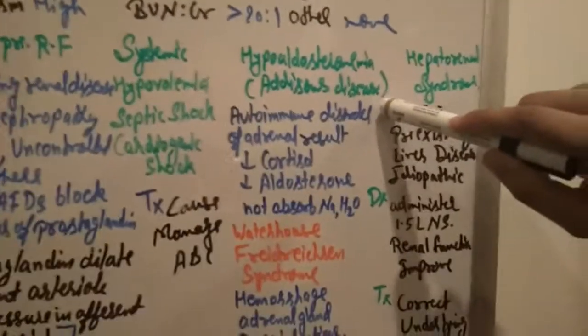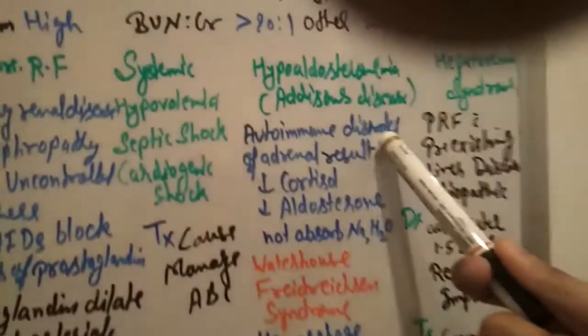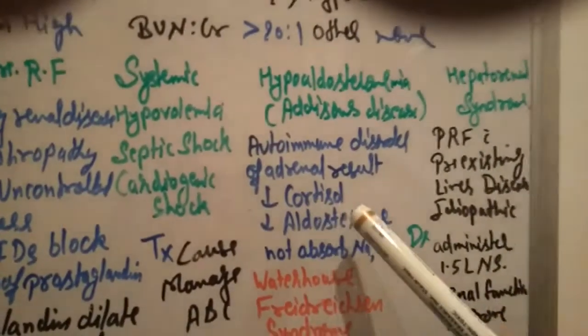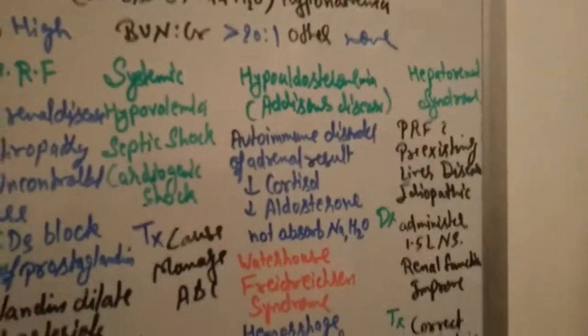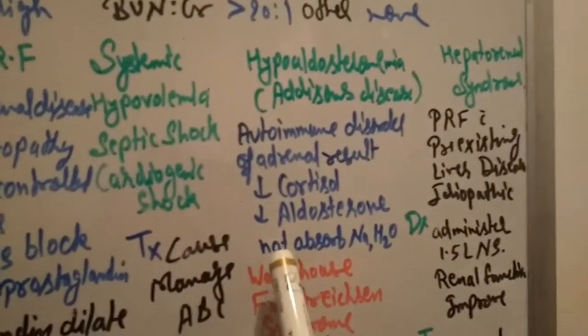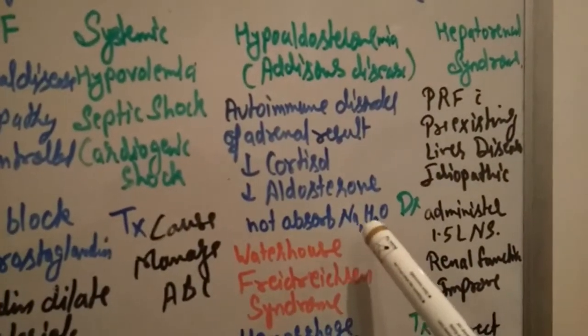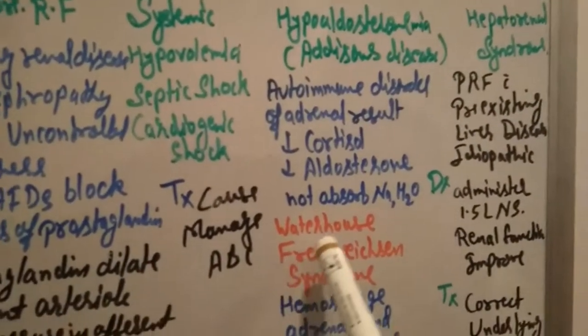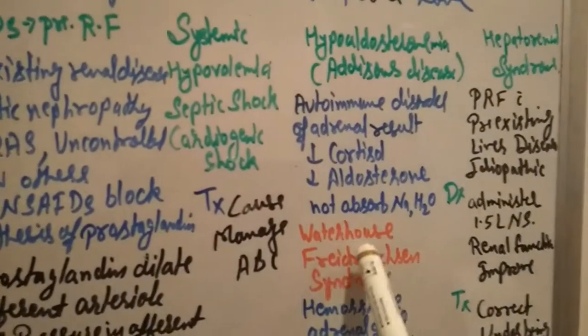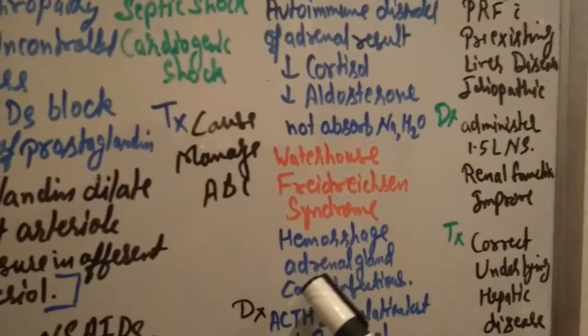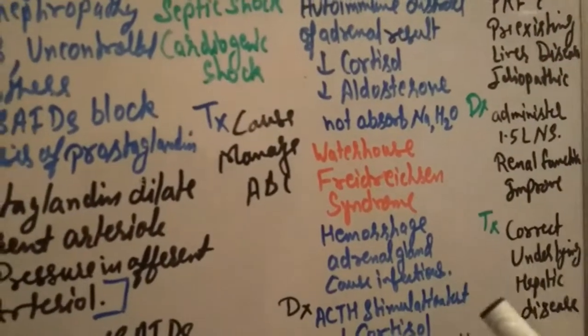Now hypoaldosteronism, Addison's disease. What is it? It's an autoimmune disorder of adrenal which results in decreased cortisol and decreased aldosterone. Hypoaldosteronism - what happens is it can't be able to absorb sodium and water because aldosterone works to absorb sodium and water.